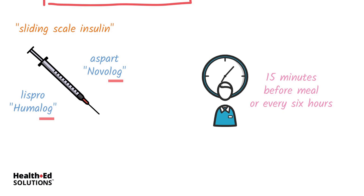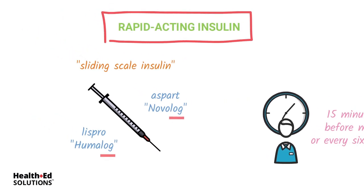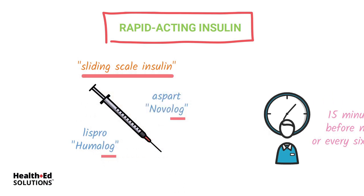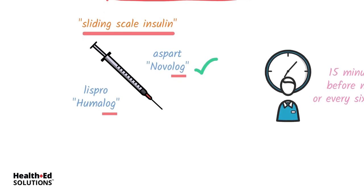When you're in clinical, you're going to check your patient's blood sugar before lunch for that every-six-hours or ACHS schedule. If their sugar is high, they're going to require sliding scale insulin. Most hospitals have now moved to using one of the rapid acting types of insulin to cover sliding scale needs, so most of the time you'll be giving Novolog.